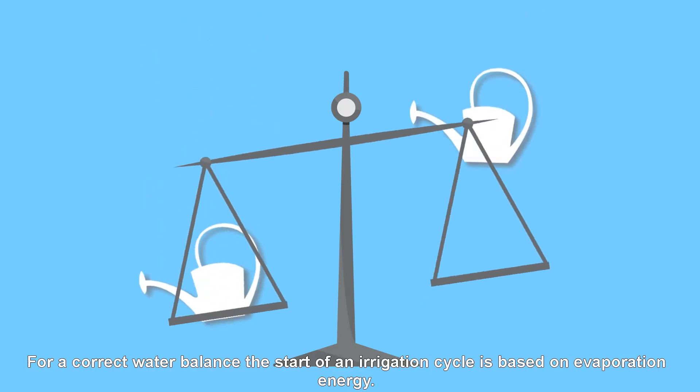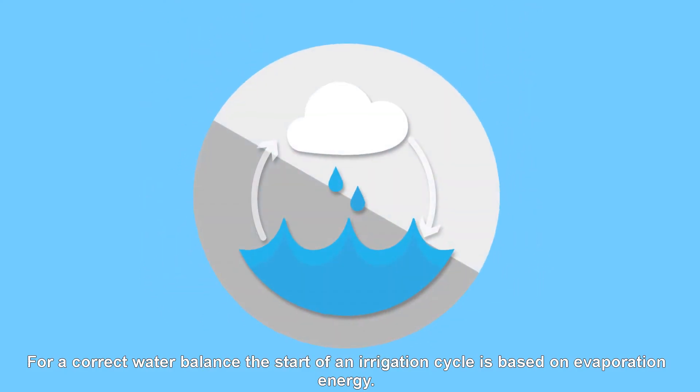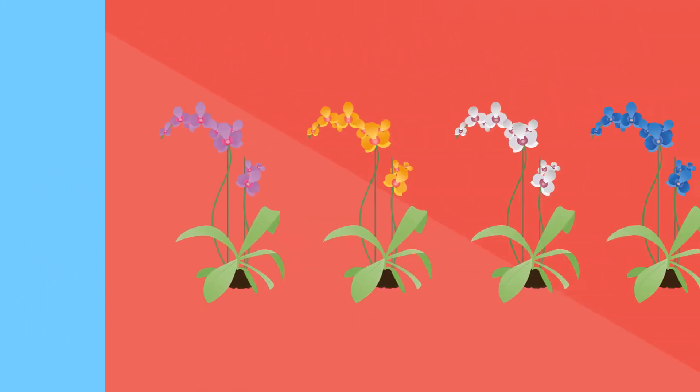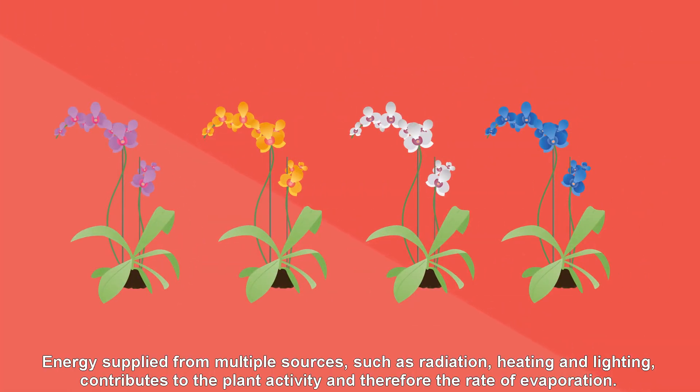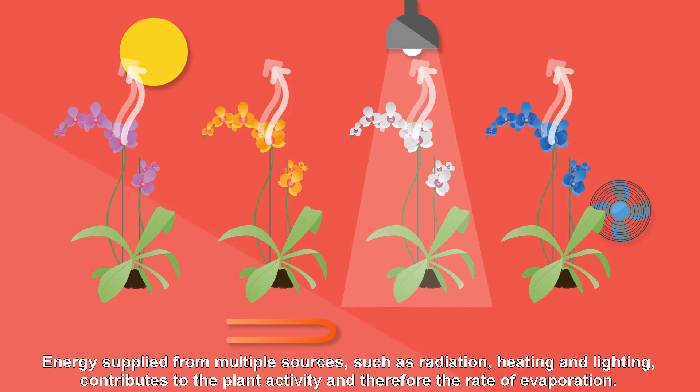For a correct water balance, the start of an irrigation cycle is based on evaporation energy. Energy supplied from multiple sources such as radiation, heating, and lighting contributes to the plant activity and therefore the rate of evaporation.